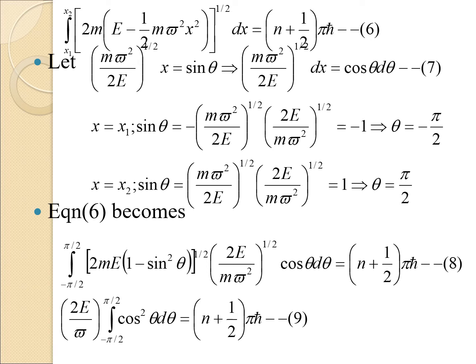Substituting x = x₁: sinθ = −(mω²/2E)^(1/2) · (2E/mω²)^(1/2) = −1, so θ = −π/2. Similarly, substituting x = x₂ gives sinθ = 1, so θ = π/2. The limits x₁ and x₂ thus transform to −π/2 and +π/2 in terms of θ.